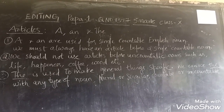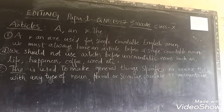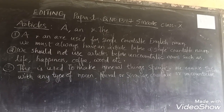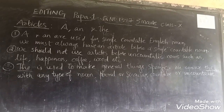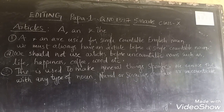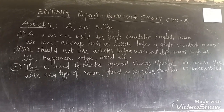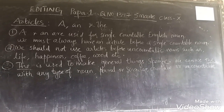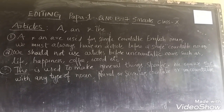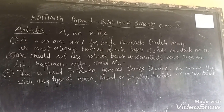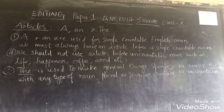An apple, an egg — this is how we check whether proper articles are placed in the sentence. Now, the way we should not use articles: we should not use articles before uncountable nouns such as life, happiness, coffee, food, etc. They are uncountable — we can't measure them. But here there is an exception: 'I want a coffee' means I want a cup of coffee — there we can use 'a' for coffee.